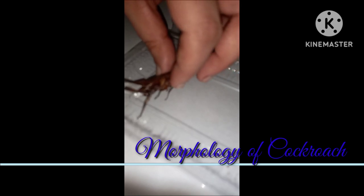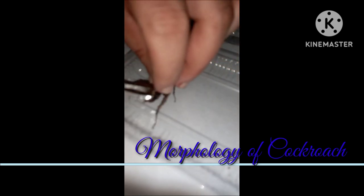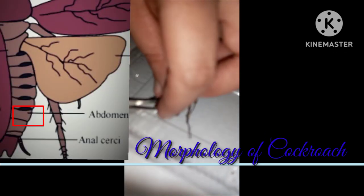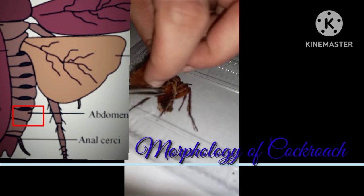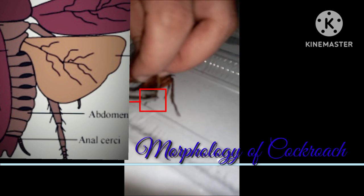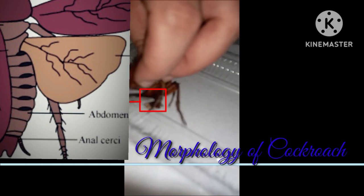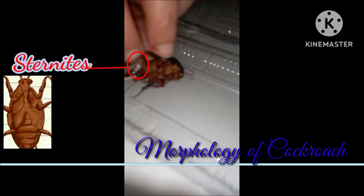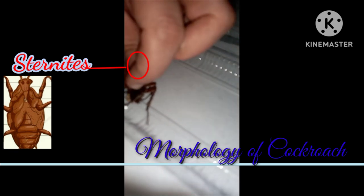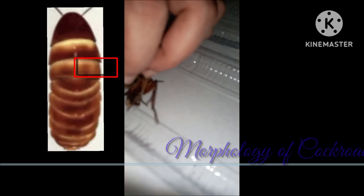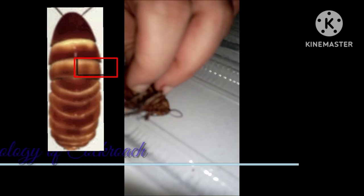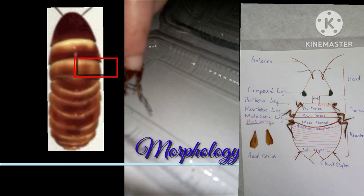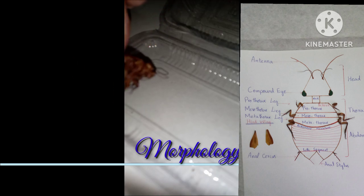The third part of the cockroach body is the abdomen. As you can see, the abdomen of the cockroach consists of 10 segments. On the dorsal side they are known as tergum, while on the ventral side they are known as sternum. There is an arthrodial membrane that is thin, soft, and flexible, used to join adjacent segments.